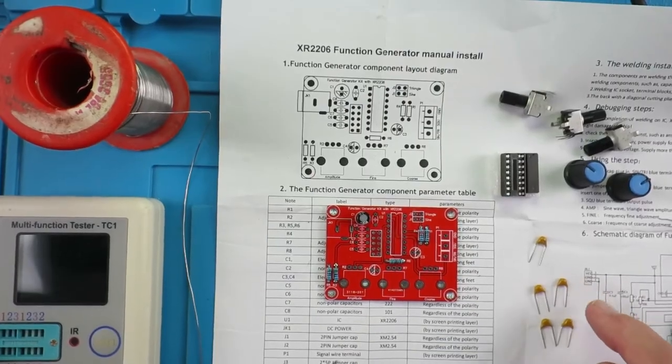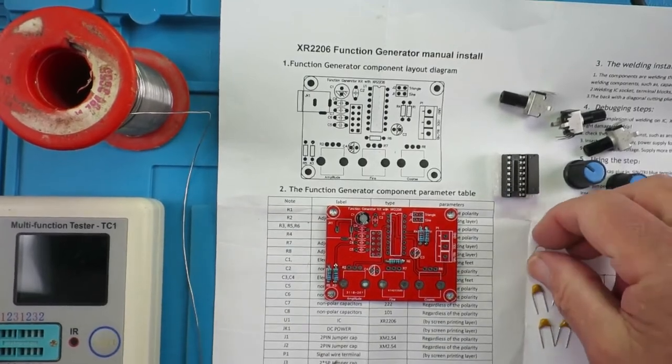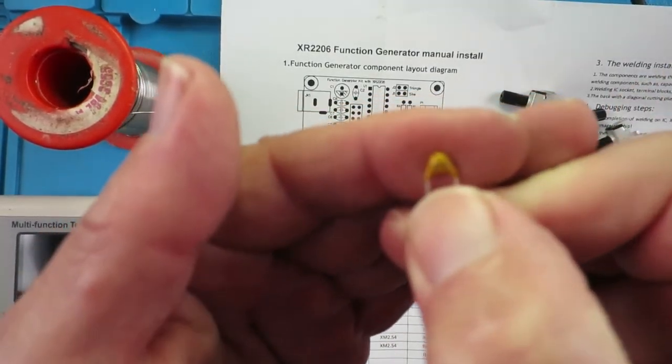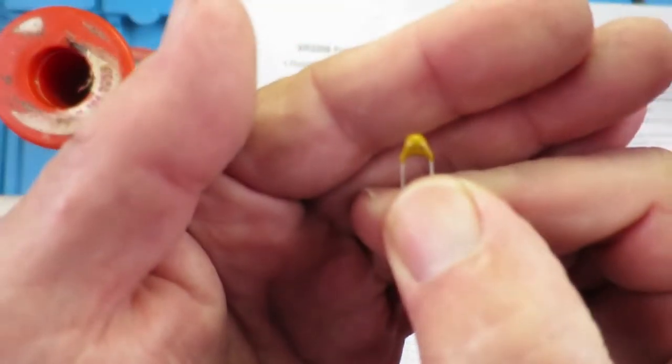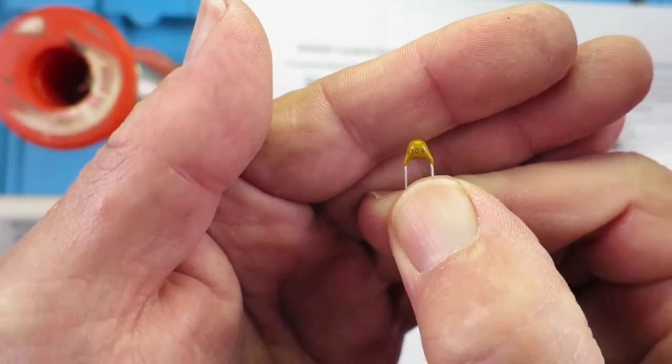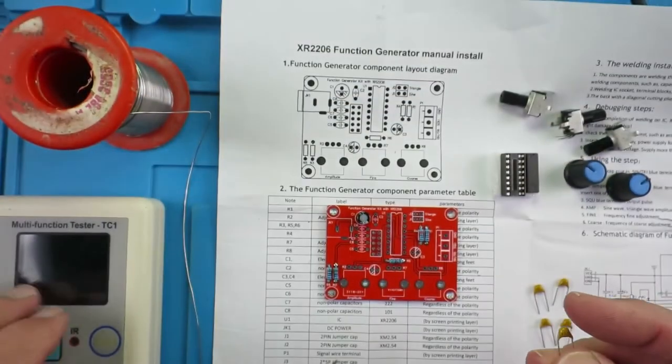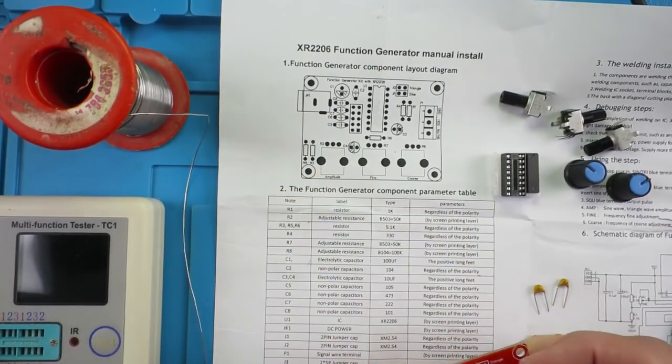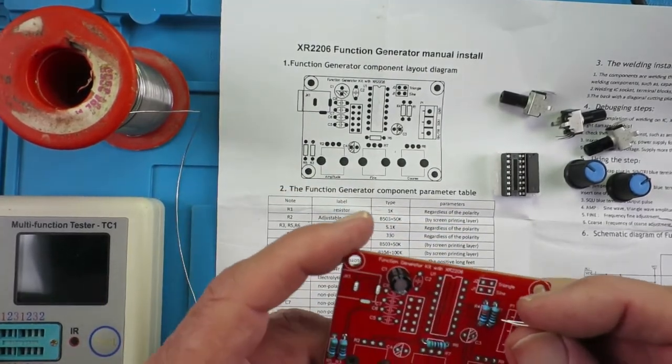Now these little ceramic capacitors are clearly marked with their numbers on them, so 104 we're looking for, and hopefully we can focus on that. And see that's 104. And if you're unsure, you've always got the tester there to use. So this little guy's C2.